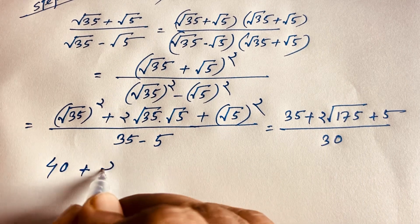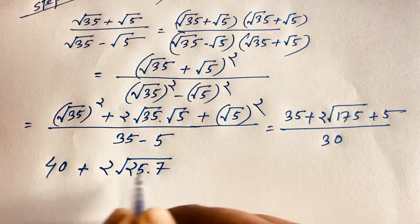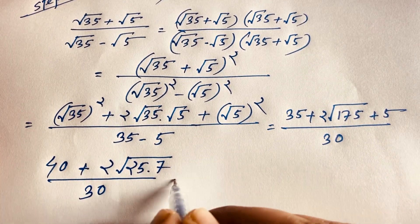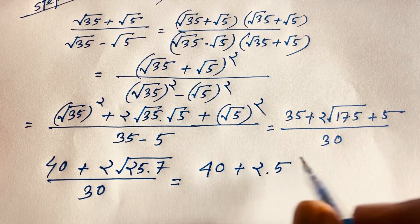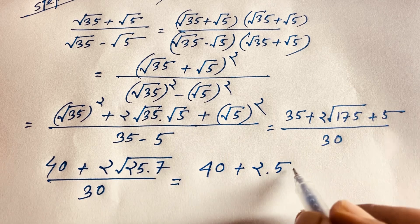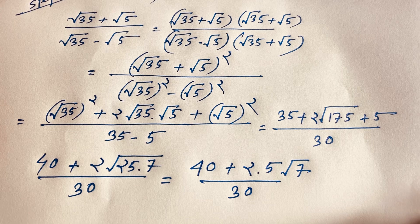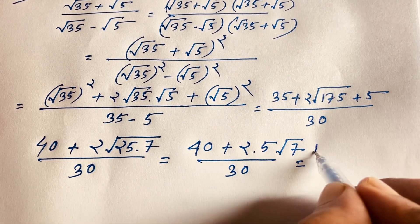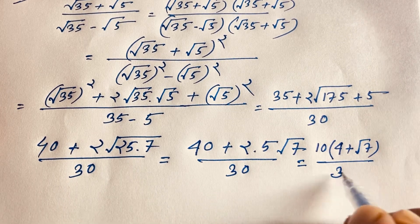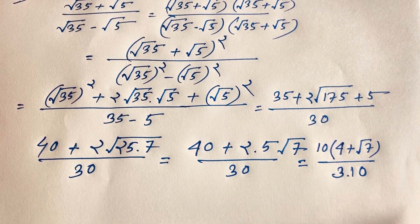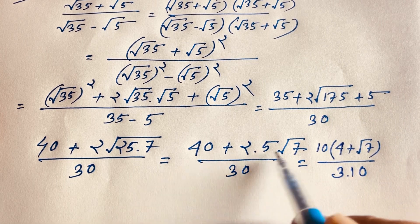Now for 2 times square root of 175: since 175 equals 25 times 7, we get 2 times 5 square root of 7, which is 10 square root of 7. So the expression becomes 40 plus 10 square root of 7, over 30. I can see that 10 is common in the numerator.